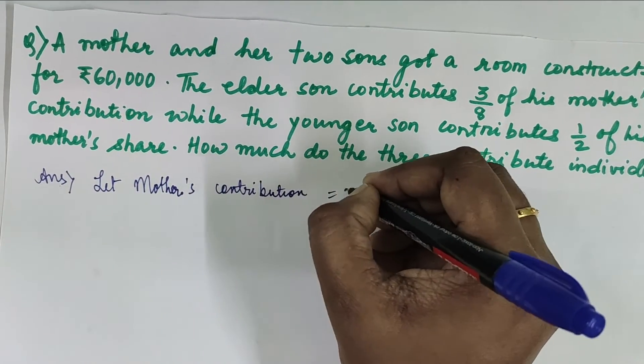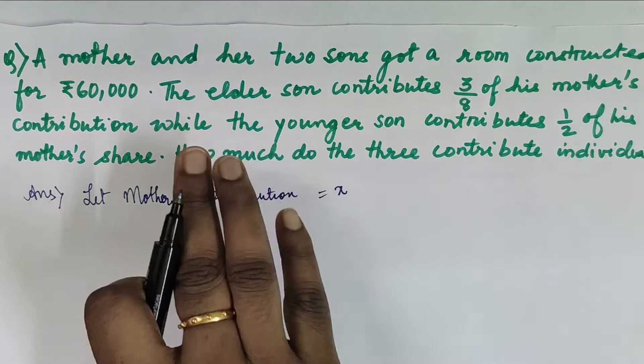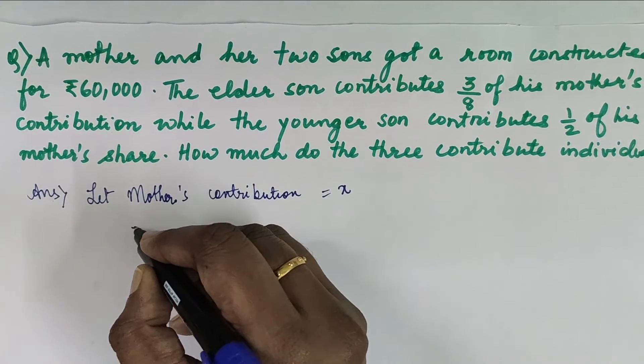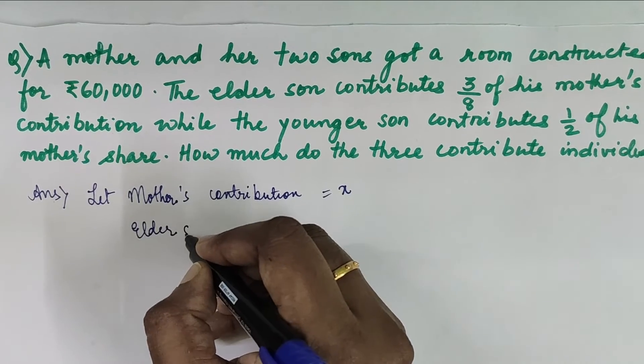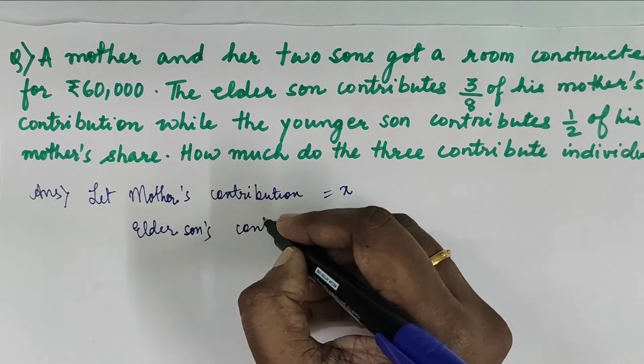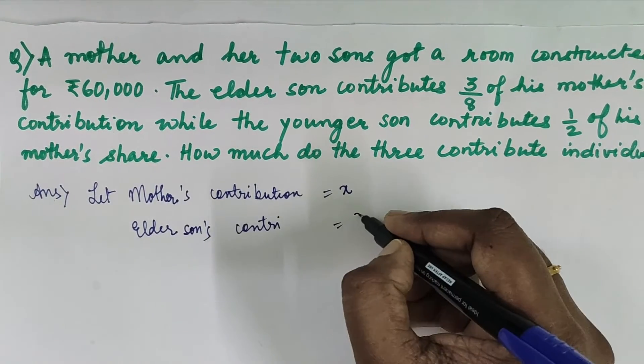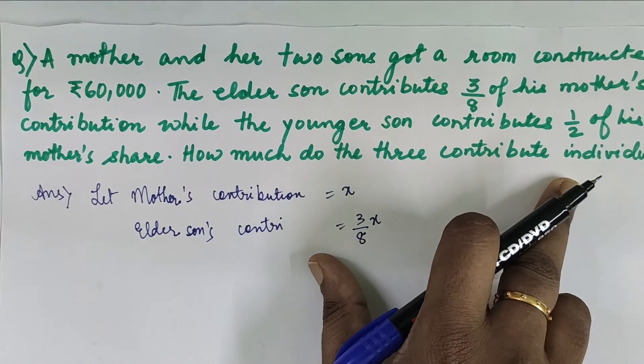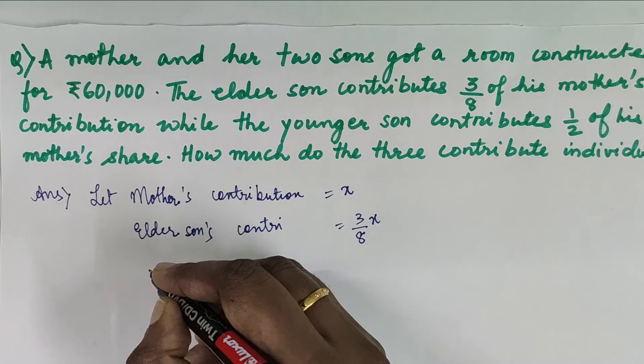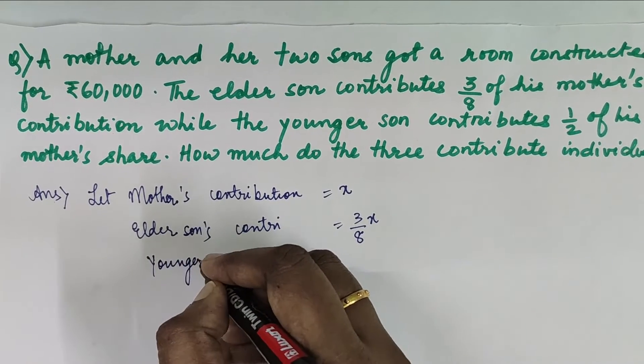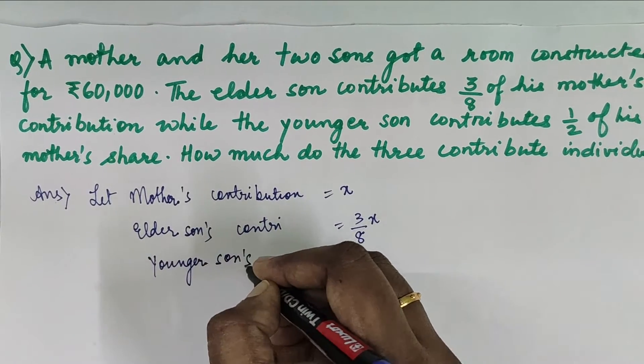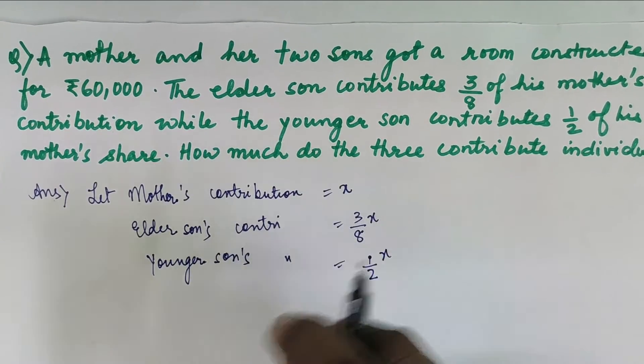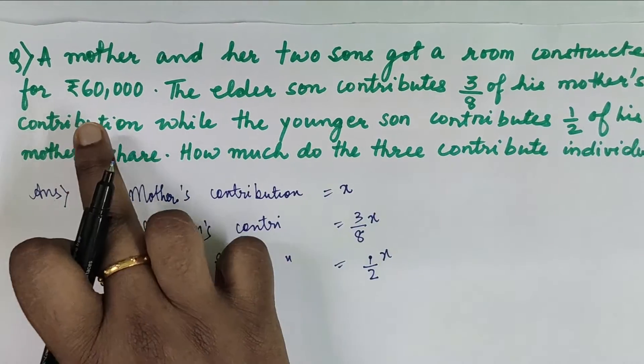Let mother's contribution be x. So the eldest son contributes 3/8 of his mother's contribution, so elder son's contribution will be 3/8 x. And the youngest son contributes 1/2 of his mother's share, so youngest son's contribution will be equal to 1/2 of x.